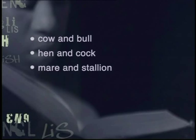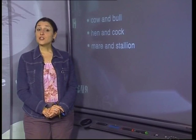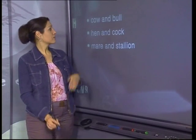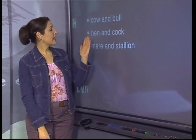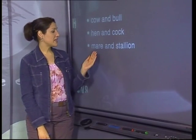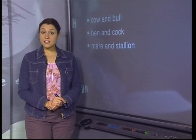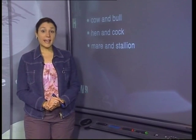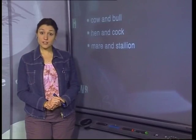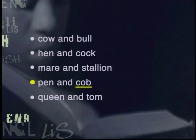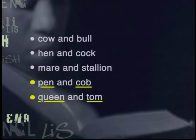One group of English nouns where a distinction is made between masculine and feminine gender is in the names of animals. You might be familiar with nouns such as: cow and bull, hen and cock, mare and stallion. There are others that are a bit more obscure — for example, a male swan is a cob whilst a female swan is a pen, and a male cat is a tom and a female cat is a queen.